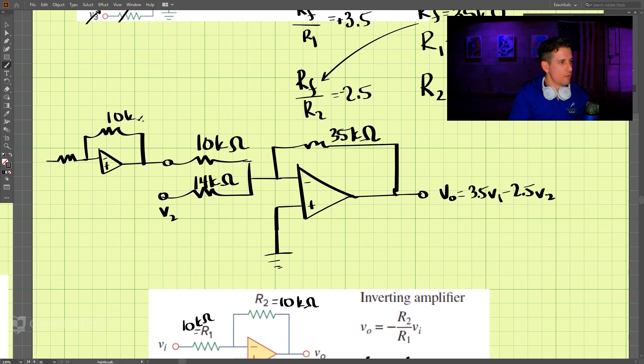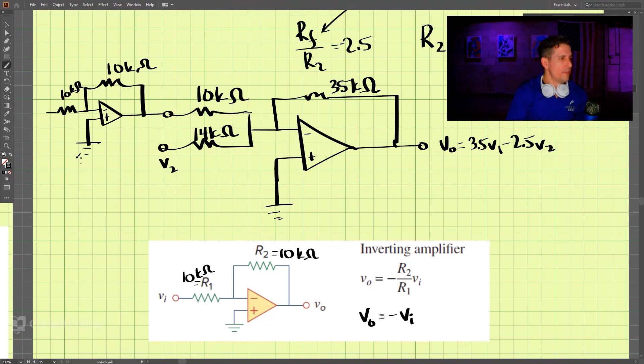And this is 10 kiloohms, and this is 10 kiloohms. And then we have this attached to ground as well. And then this here can be our v1, and then that makes this negative v1 here, and then we get this solution.